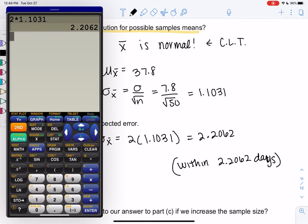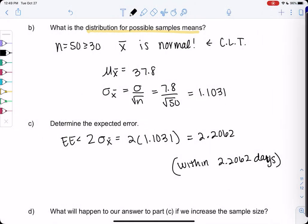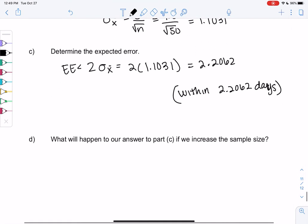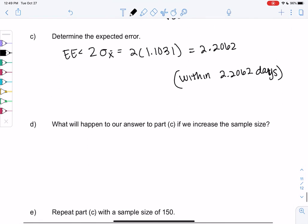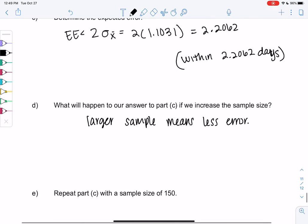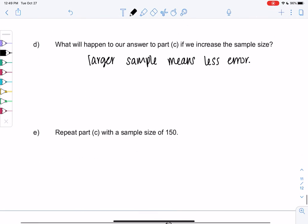What happens to our answer in part C if we increase the sample size? I think we should get less error, right? Larger sample means less error, less than 2.2 days. Let's check that out. We're going to change the sample size to 150.